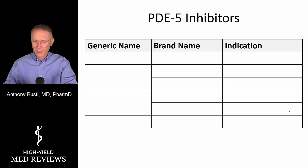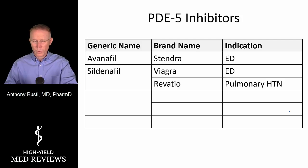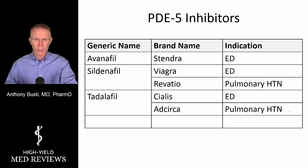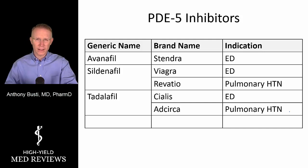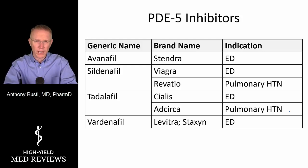Now let's talk about the type 5 phosphodiesterase inhibitors. There are several agents on the market: Avanafil (Stendra) for erectile dysfunction; Sildenafil — available as Viagra for erectile dysfunction and Revatio for pulmonary hypertension; Tadalafil, known as Cialis and also Adcirca for pulmonary hypertension; and Vardenafil (Levitra), used only for erectile dysfunction.